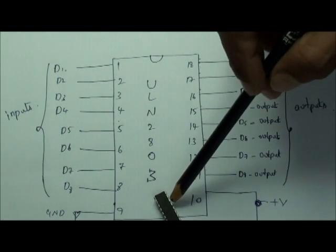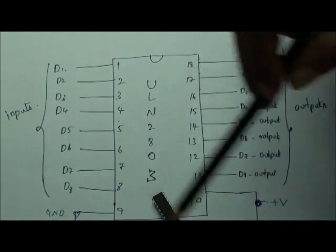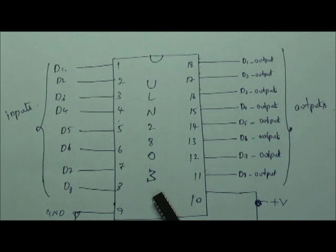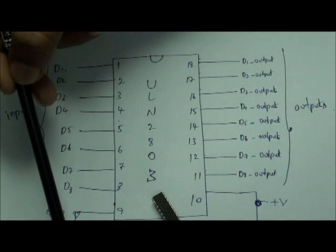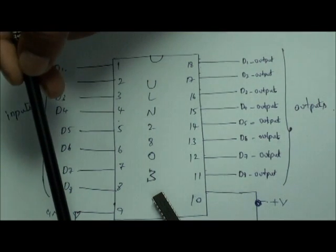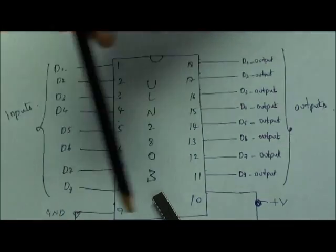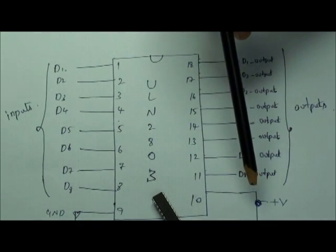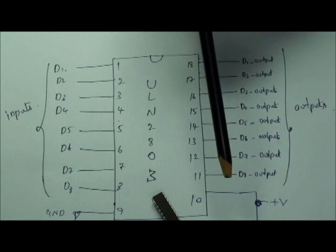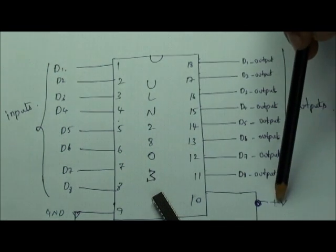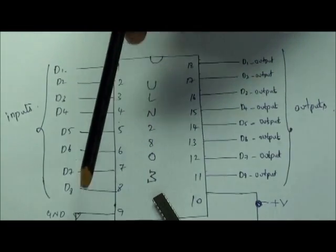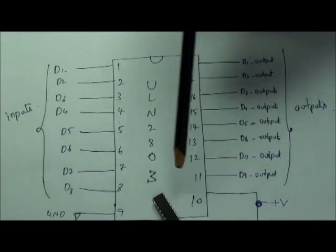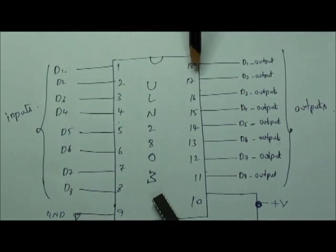Here this is a normal DIP package — this is an 18 pin package. Coming to the pin connections: pin 9 is the ground pin and needs to be connected to the same ground reference that the TTL input is using. Pin 10 is the common bus for the flyback protection diodes and connects to the plus V supply of the output. Pins 1 to 8 are the data input pins, and pins 11 to 18 are the output pins.